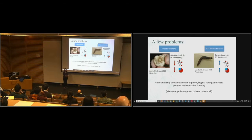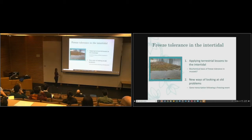Marine organisms don't seem to use any of those mechanisms at all. So this leads us to the possibility that maybe by looking at marine organisms, we won't get sidetracked by some of these other mechanisms, and maybe we could actually get at what you need to do to survive freezing. I'm going to talk about two things that have to do with the intertidal and some of my research I did here with Chris Harley. First, applying some terrestrial lessons to the intertidal to try and work out some of the biochemical mechanisms of freeze tolerance using mussels. And then secondly, some new ways of looking at old problems and using gene transcription to start looking for new hypotheses.